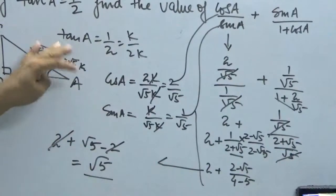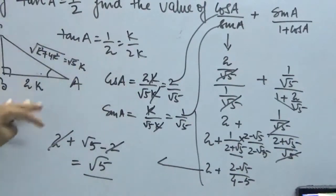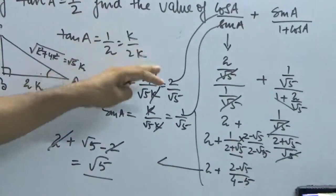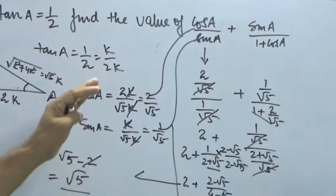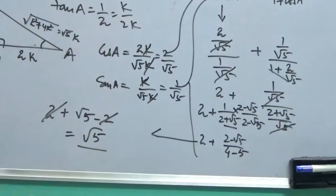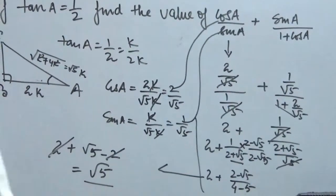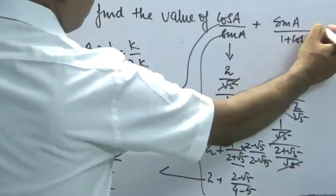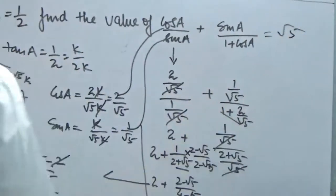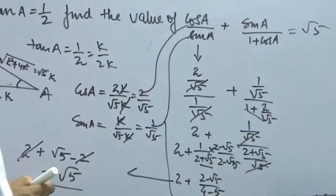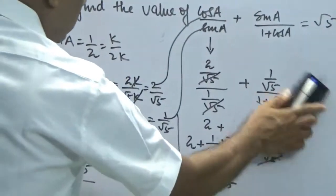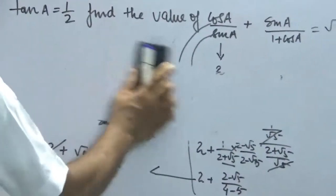So this is the method using the Pythagoras theorem, but there is another method which can be used using identities and we will see how that happens. Let's write the answer √5 so that later on by alternate method if we get it, we will try to match it. So let's do the second method using identity.